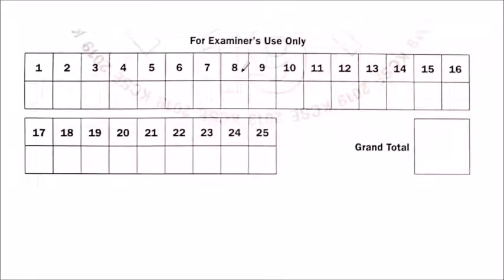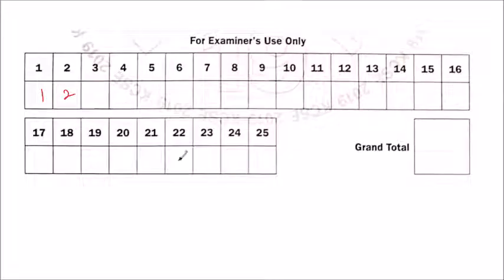Still on the same page, there is another part where the examiner will fill in marks for every question you have answered. For example, if you get one mark in a question, it is indicated there, and the total is shown. This is the first page of the biology paper.